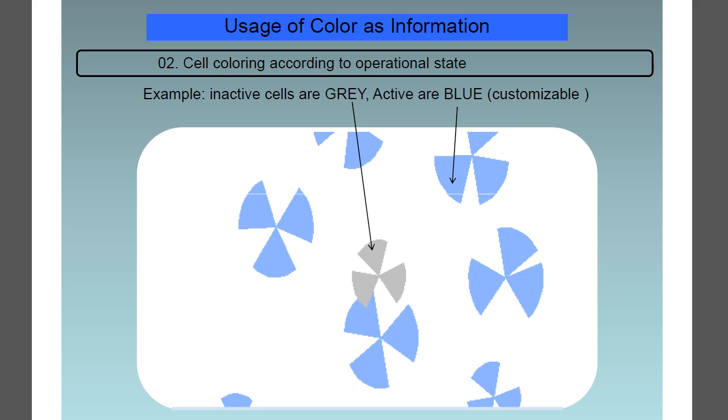On to feature number 2, this is the cell coloring according to the operational state. Here you can see that the inactive cells are grey and the active ones are blue, and that of course is fully customizable from within the software.